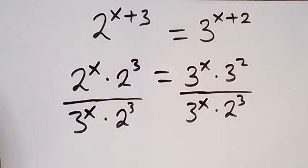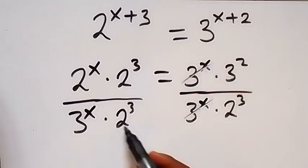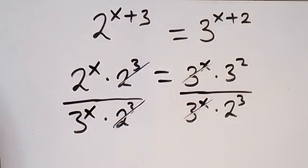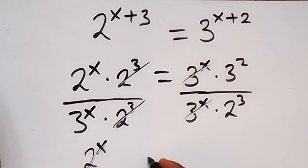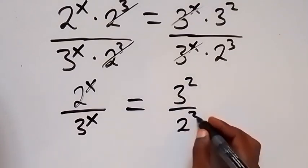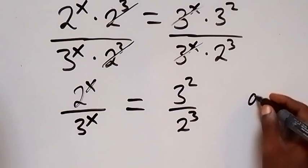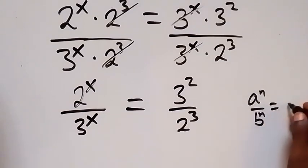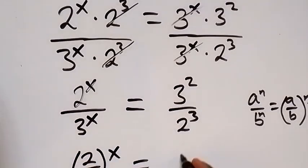On this side we have 3 raised to power x cancel 3 raised to power x, and on this side 2 raised to power 3 cancels 2 raised to power 3. What we have left is 2 raised to power x over 3 raised to power x, which equals 3 raised to power 2 over 2 raised to power 3. We can rewrite the left hand side using the rule a^n over b^n equals (a/b)^n, so this becomes 2 over 3 raised to power x equals 3 squared over 2 cubed.